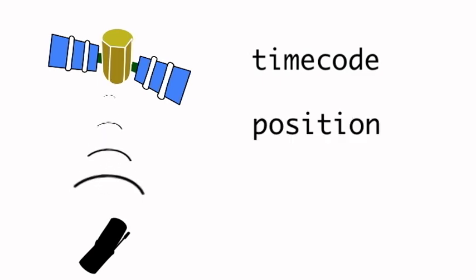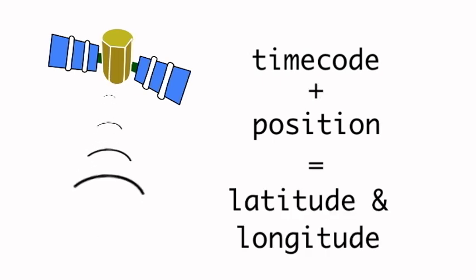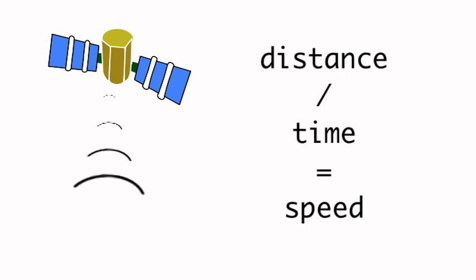the time the signal was sent and the orbital information of the satellite. Based on that, your phone's GPS receiver calculates your location in latitude and longitude. It can also calculate your current speed based on the time between readings and the distance covered.